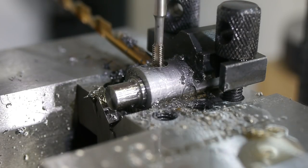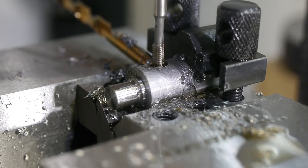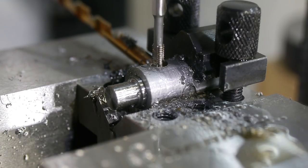I used my shop made tap follower in the spindle to cut the thread. First with the starter tap, then with a bottoming tap to make sure I had enough turns.